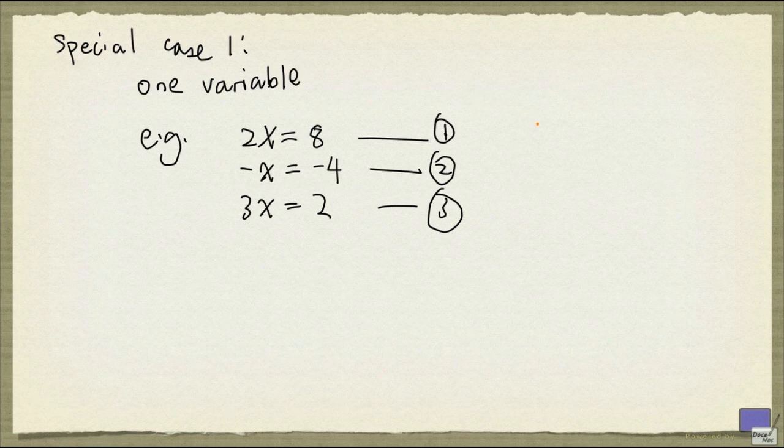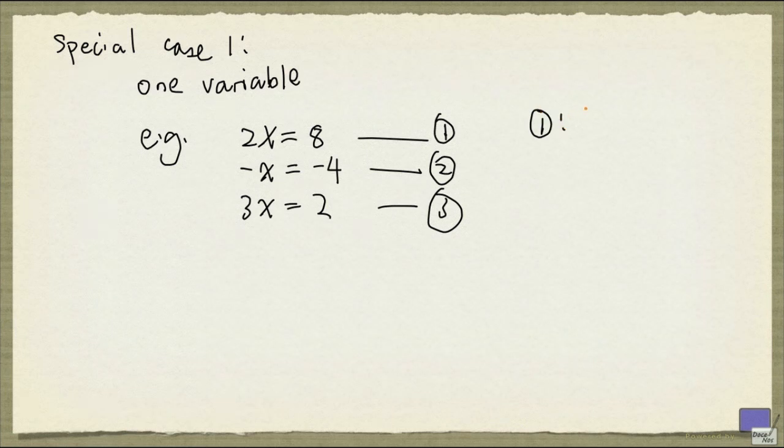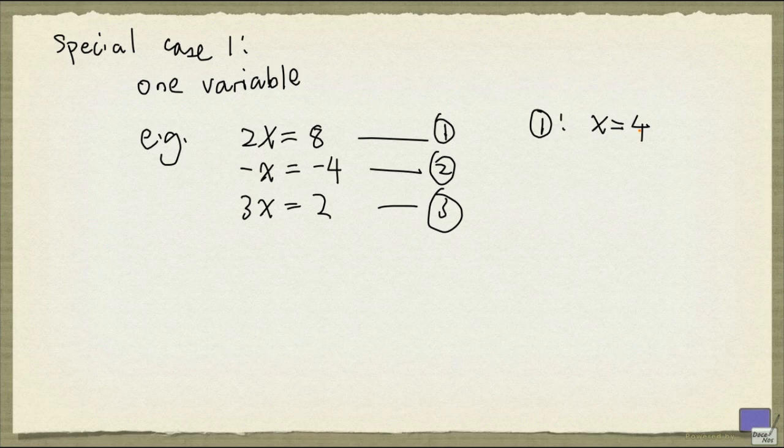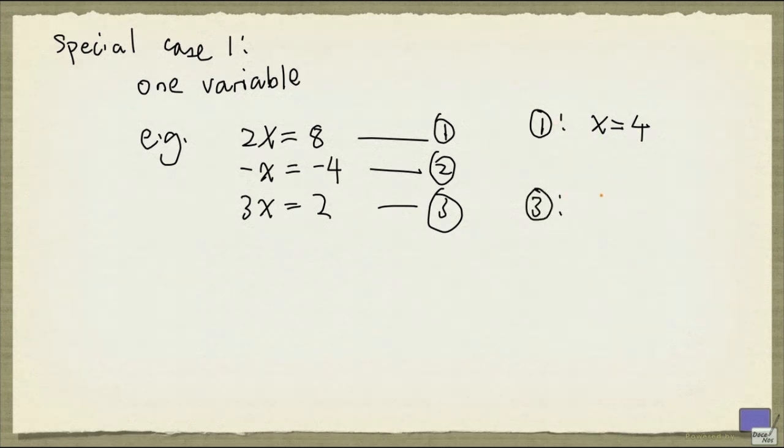Now, if you look at 1, you can rewrite that as x equal to 4, because if you multiply both sides by 1 half, the left side becomes x, and the right hand side becomes 4. And if you look at the third equation, multiplying both sides by 1 third will give us x equal to 2 thirds.